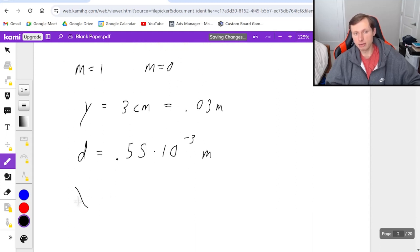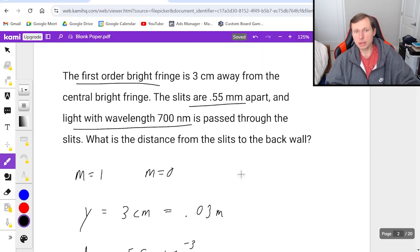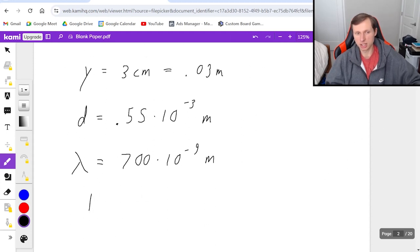They tell me wavelength is 700 nanometers, so λ = 700 × 10^-9 m, because nano is 10^-9. That's everything they give me. The question asks for the distance from the slits to the back wall - in other words, L.